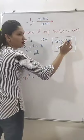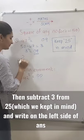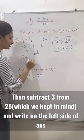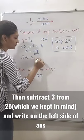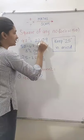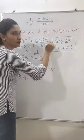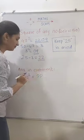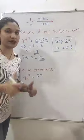Subtract 3 from 25. 25 minus 3 is equal to 22. 22 will go on the left side of our answer. This will be our answer — please share your answer in the comments.